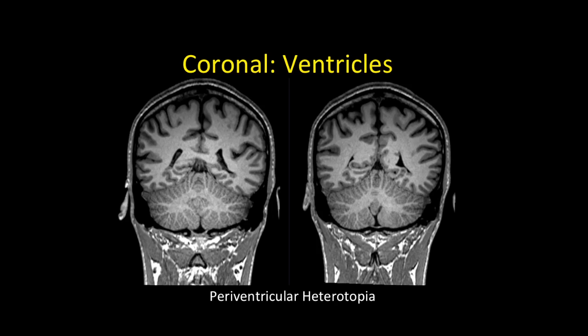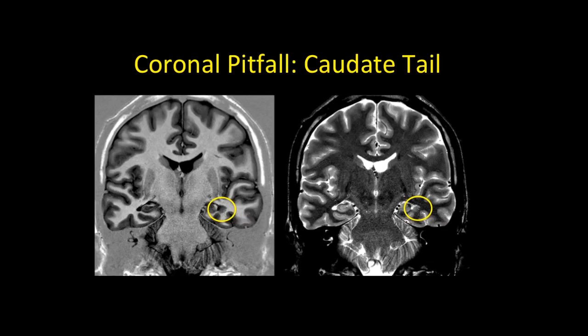Continuing with the coronal, after looking at the poles, look at the ventricles for heterotopias. These will be T1 iso-intensity cortex lining the ventricles — they're often missed in the occipital horns and temporal horns. Here's a good case. A key pitfall: the caudate tail is a normal structure lining the temporal horn that can be mistaken for heterotopia. Caudate tails are bilateral, symmetric, and present in every person — don't over-call them. The heterotopia has a distinctly different appearance.